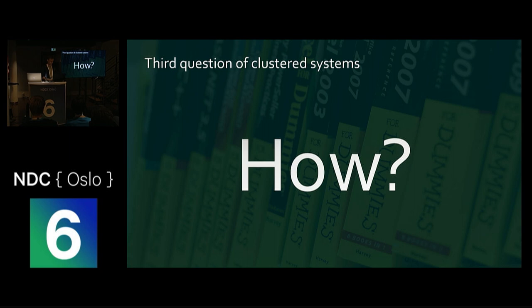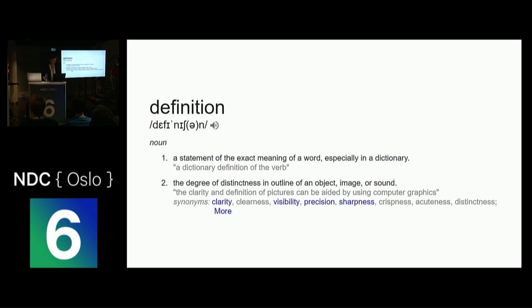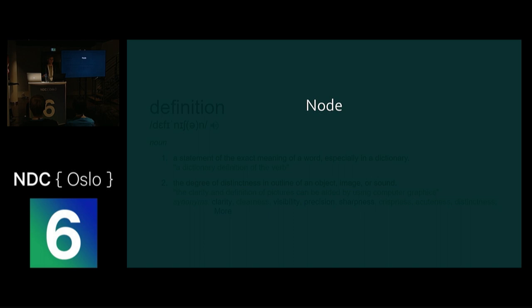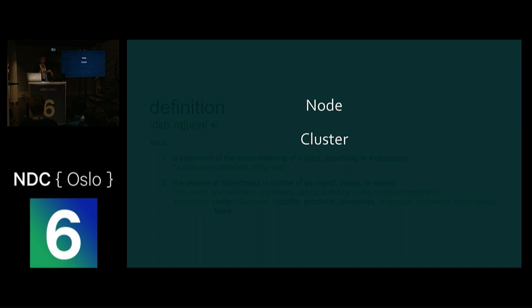I'll explain some terms before diving into demos. A node is a logical unit inside the cluster, identified by three things: hostname, port, and a unique ID assigned when the actor system spawns. A node is not a machine — you can run multiple nodes on the same machine or even in the same process. Think of a node as a single actor system that talks to other nodes. A cluster is simply a collection of nodes where the nodes know about each other and communicate, because a bunch of nodes that don't know about each other don't form a cluster.